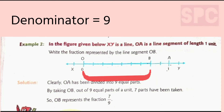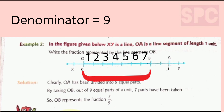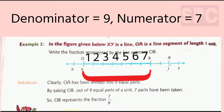Now, as we have to write the fraction represented by the line segment OB, we have to see out of 9 equal parts, how many parts are falling under OB. Let's count: 1, 2, 3, 4, 5, 6, 7. So out of 9 equal parts, we consider 7 parts, meaning our numerator will be 7 and denominator will be 9. So OB represents the fraction 7 by 9.